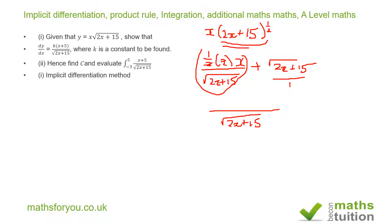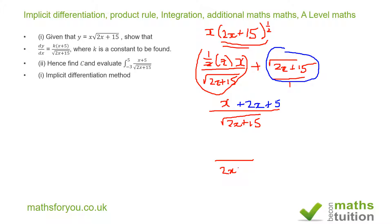If we multiply the first term by 2x plus 15, we end up with x. If we multiply the second term by the square root of 2x plus 15, we end up with 2x plus 15. Combining over a common denominator of the square root of 2x plus 15, the numerator simplifies to 3x plus 15.